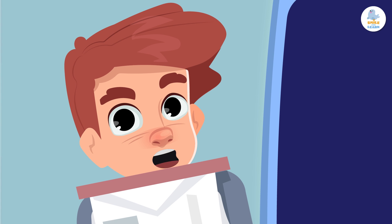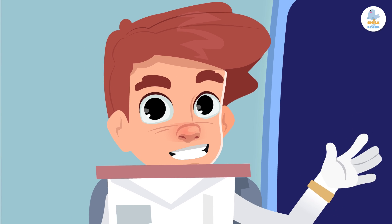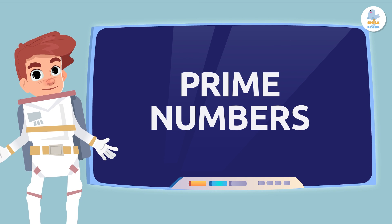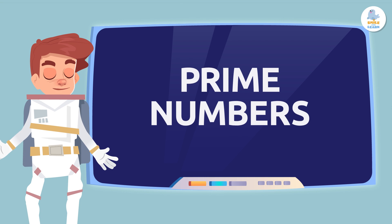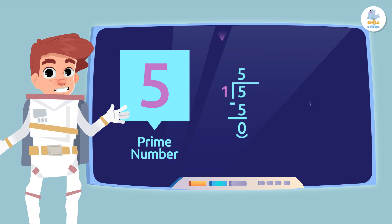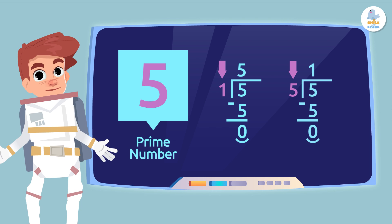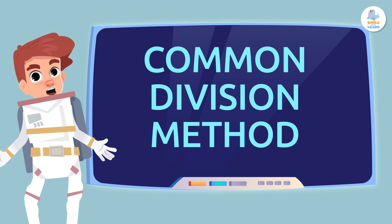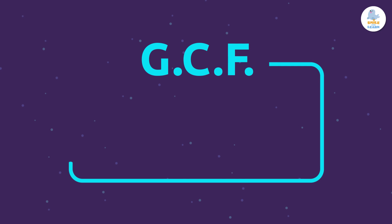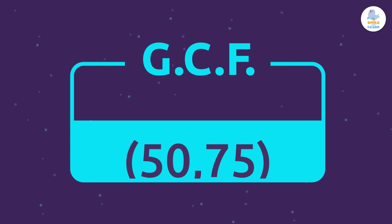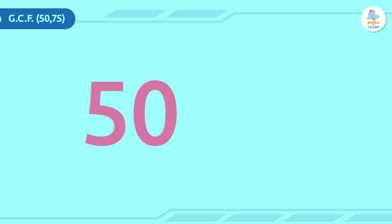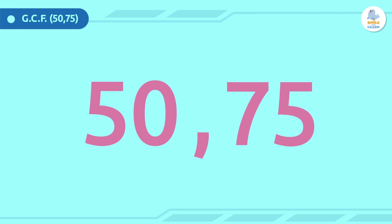To find the greatest common factor, we have to start by thinking about prime numbers. Do you remember what prime numbers are? Exactly — whole numbers that can be divided by one and themselves. There are lots of ways to find the greatest common factor. One of them is the common division method. Let's do an example: we're going to find the greatest common factor of 50 and 75.